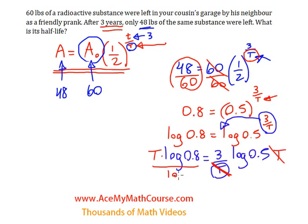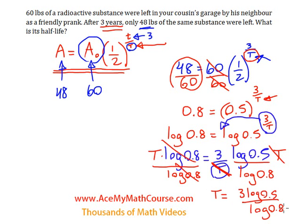And since we want to isolate the big T, I can divide both sides of the equation by log 0.8. So those go away and we have T equals 3 times the log of 0.5 over the log of 0.8.